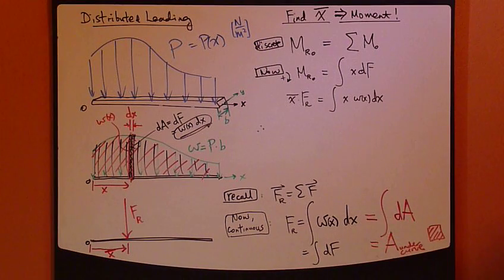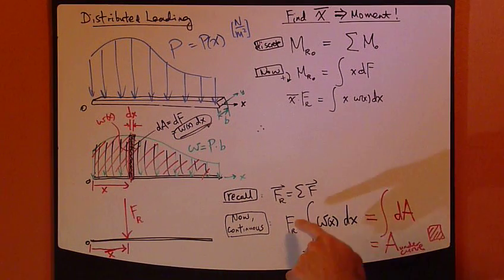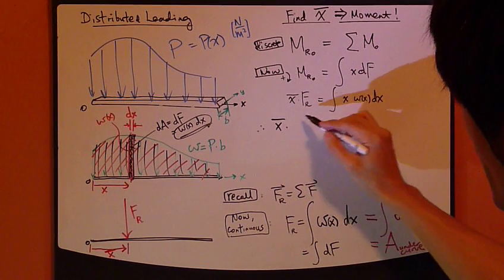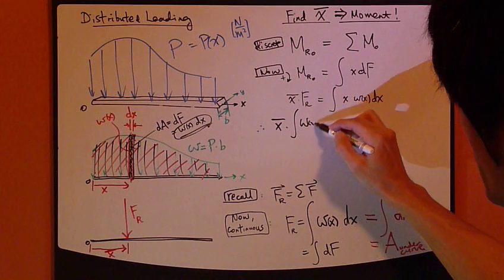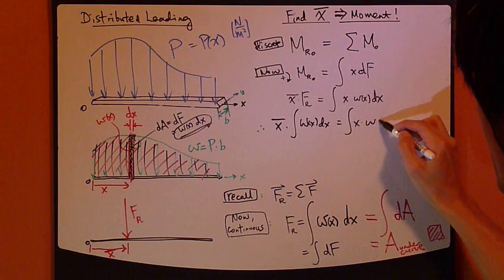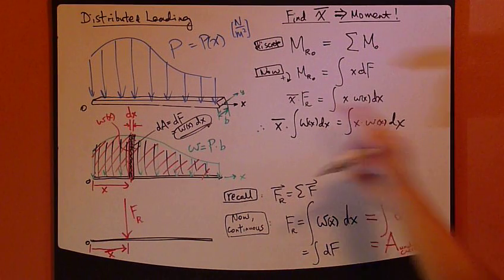So, therefore, FR is this guy right here. So I'm going to plug FR back up here. So FR is integral W(x)dx. Right-hand side. So from this relationship...